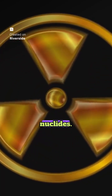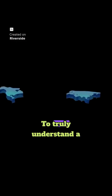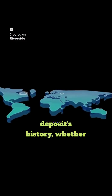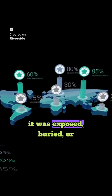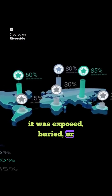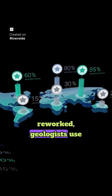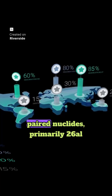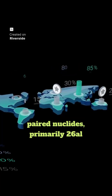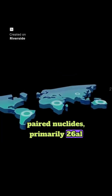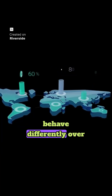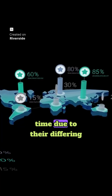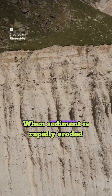To truly understand a deposit's history — whether it was exposed, buried, or reworked — geologists use paired nuclides, primarily ²⁶Al and ¹⁰Be, because they behave differently over time due to their differing half-lives.